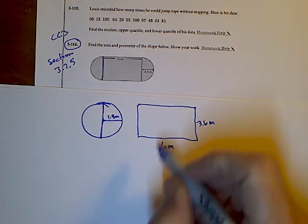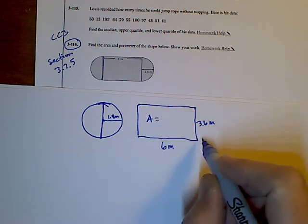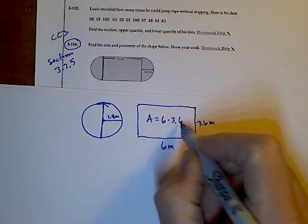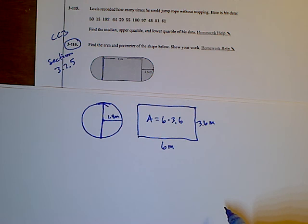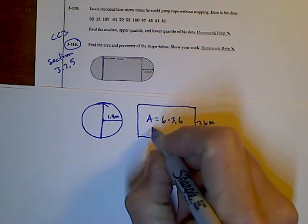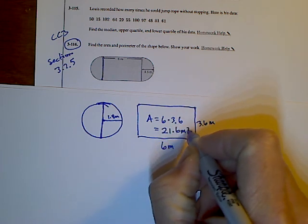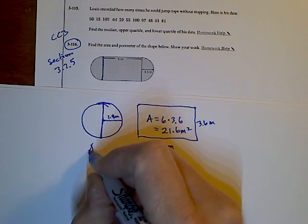So I can look at my area here and I can find the area of this rectangle by just taking length times width, 3.6 times the 6. And so 3.6 times the 6 would be 21. So area is equal to 21.6 meters squared. That's the area of the rectangle.